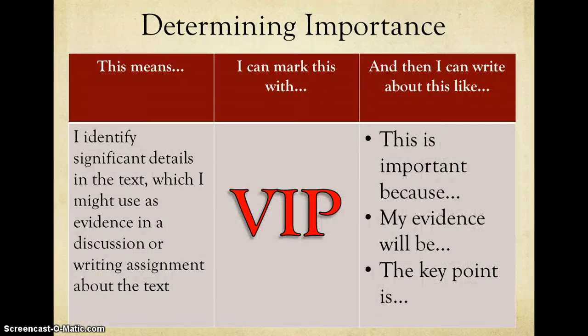That brings us to determining importance. When determining importance, I'm identifying significant details in the text. So I'm looking for very specific things that I may use as evidence in a discussion or when writing about the text. I indicate a determining importance annotation through the use of the acronym VIP, which in this case will stand for very important point. And again, here are your sentence stems that you can use when writing about this annotation.